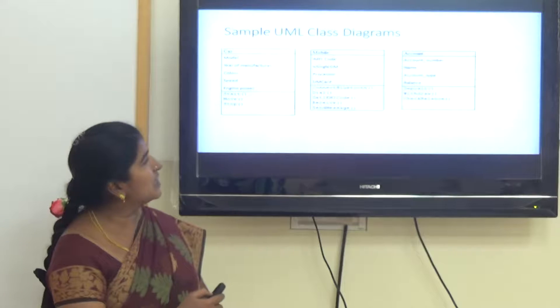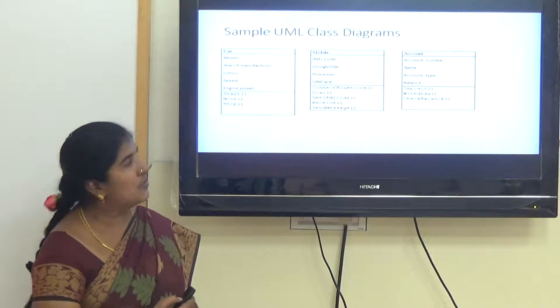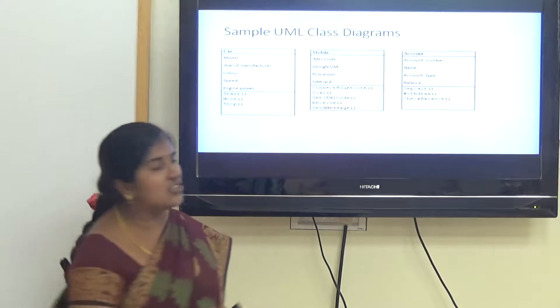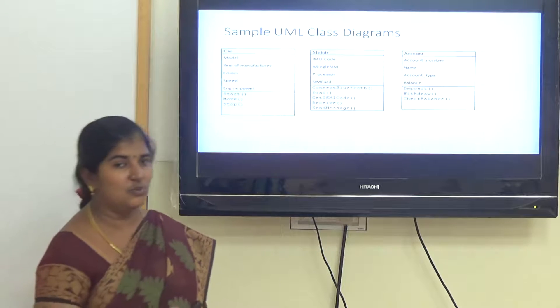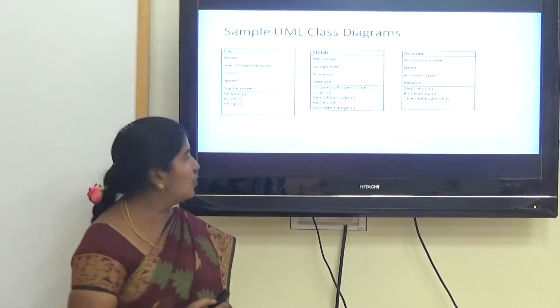These are simple examples of class diagrams for a few objects. Car can have attributes: model, year of manufacture, color, and speed. Behaviors of car can be start, move, and stop.